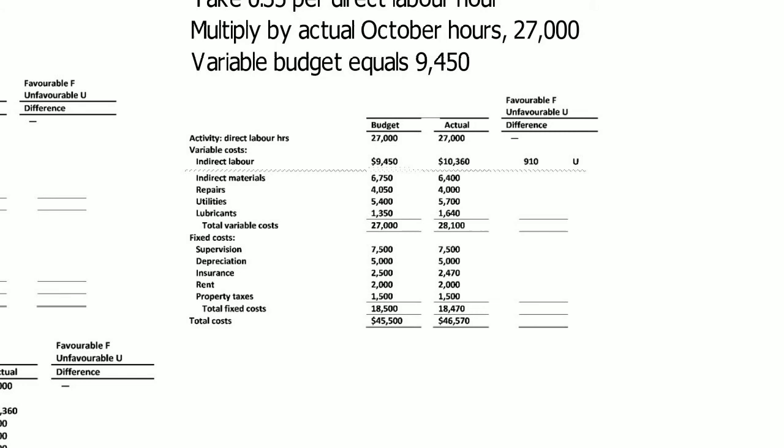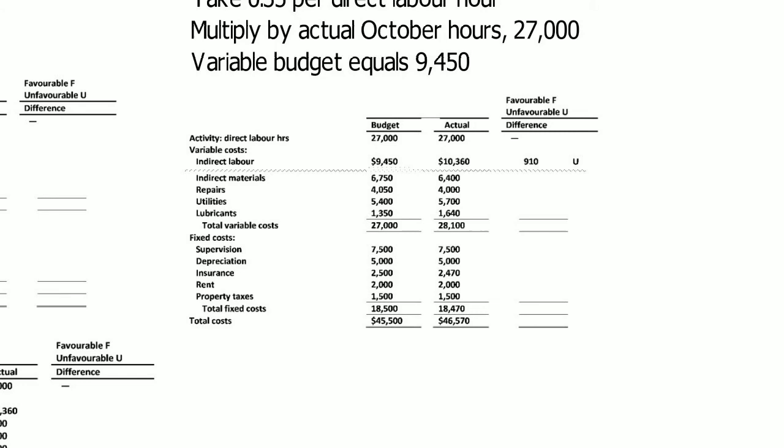Now you've got two columns populated, and all you need to do is figure out your variances. Take your budget minus your actual, and if it's positive, that's favorable, and if it's negative, it's unfavorable. And there you go. Problem 1150 is complete.